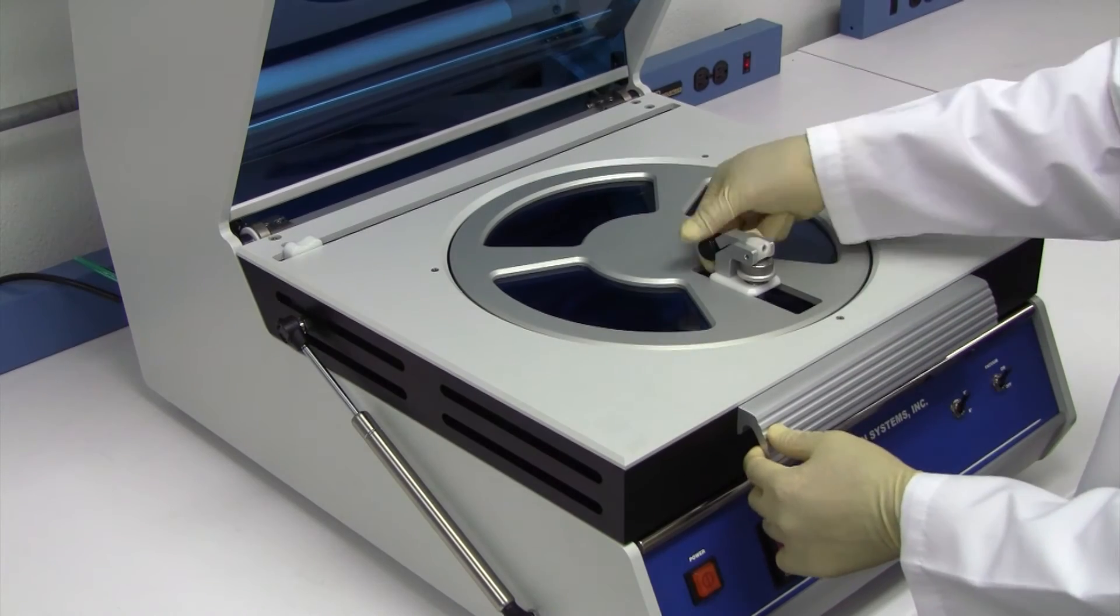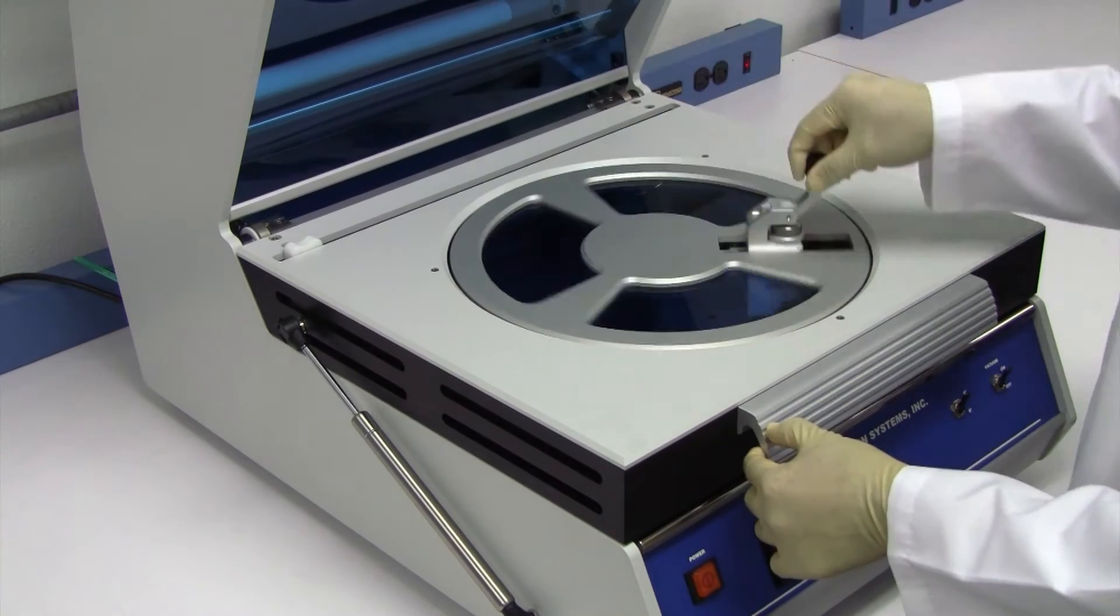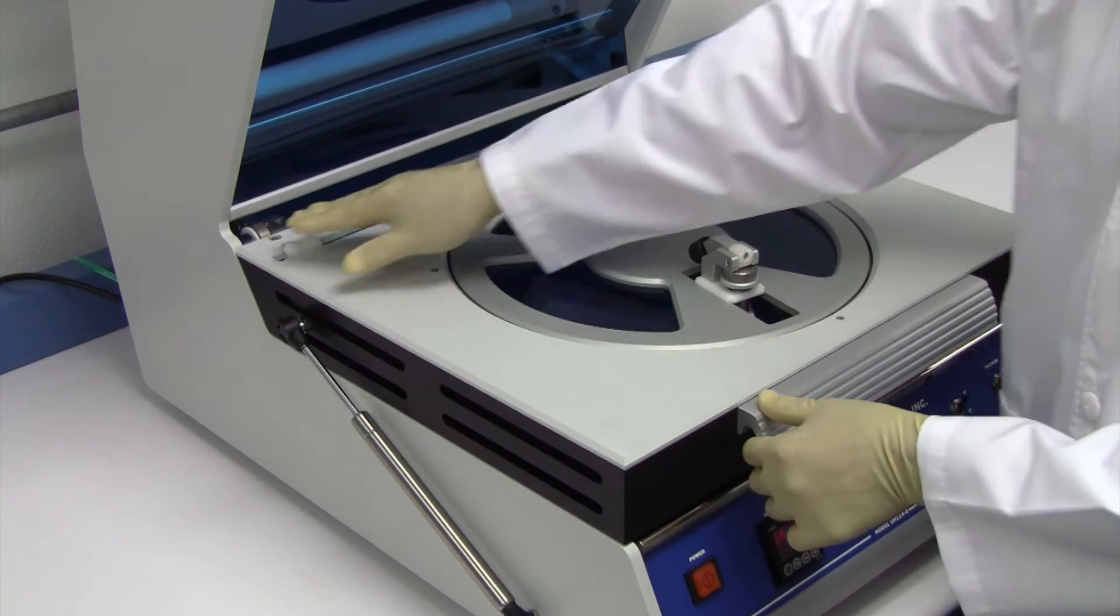Close the lid and rotate the circular cutter 360 degrees to cut the film along the film frame.